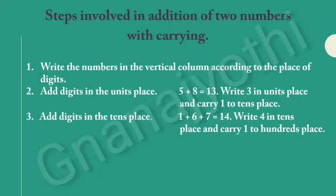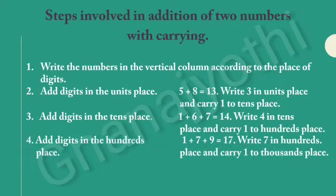Step 3: Add digits in the tens place. So, the digits in the tens place are 6 and 7 plus Kari 1. If we add these, we get 14. Write 4 in tens place and Kari 1 to hundreds place. Step 4: Add digits in the hundreds place. The digits in the hundreds place are 7 and 9 with Kari 1. If we add these, we get 17. Write 7 in hundreds place and Kari 1 to thousands place.